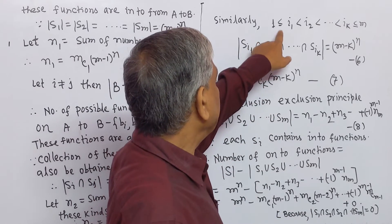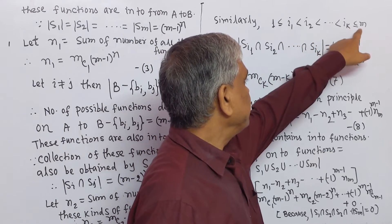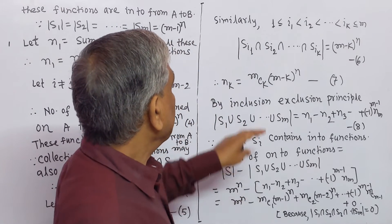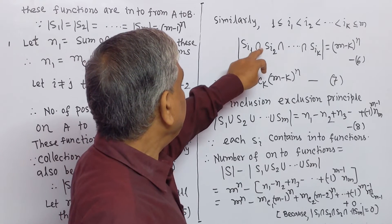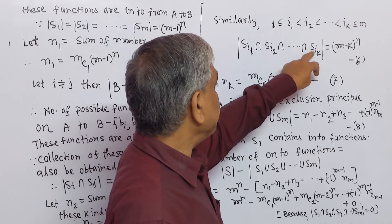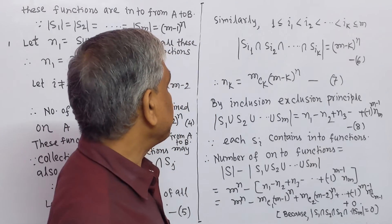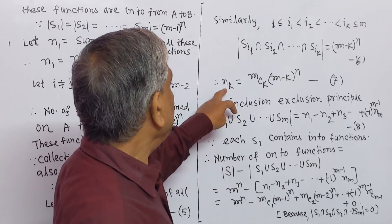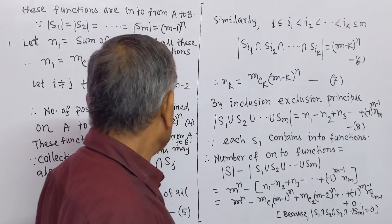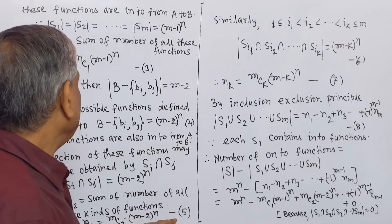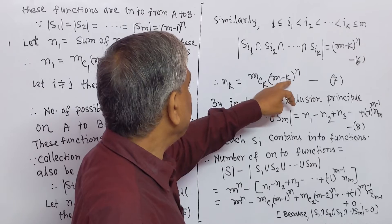Similarly, for 1 ≤ i1 < i2 < ... < iK ≤ m, the number of elements in Si1 intersect Si2 intersect ... intersect SiK will be (m-K) to the power n. Let NK be the sum of all these types of functions. Similar to the previous cases, NK equals mCK multiplied by (m-K) to the power n.